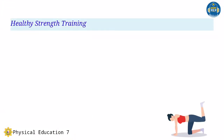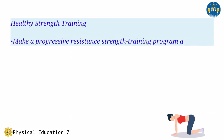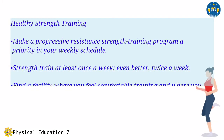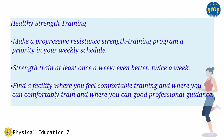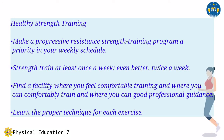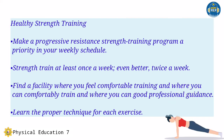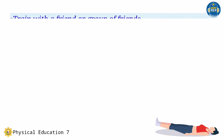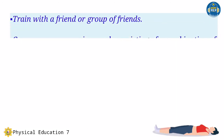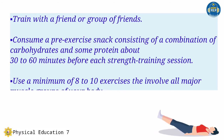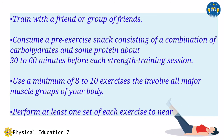Healthy strength training: Make a progressive resistance strength training program a priority in your weekly schedule. Strength train at least once a week — even better, twice a week. Find a facility where you can feel comfortable, train comfortably, and have good professional guidance. Learn the proper technique for each exercise. Train with a friend or group of friends. Consume a pre-exercise snack consisting of a combination of carbohydrates and some protein about 30 to 60 minutes before each strength training session.